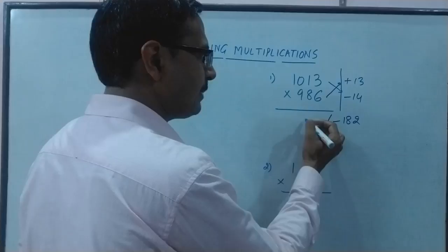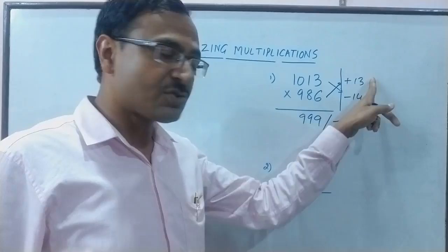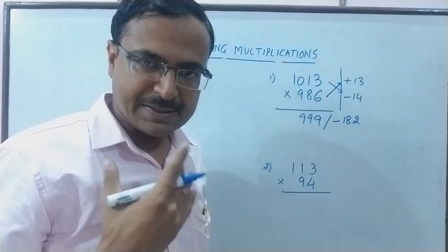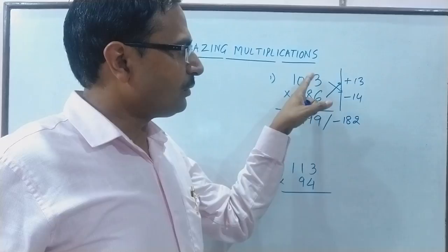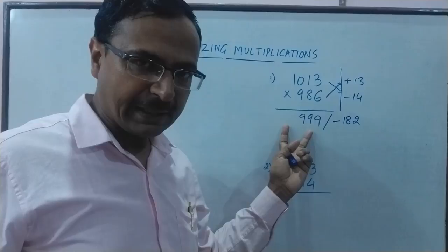On the left hand side I have to write the number which is the sum of either these two or these two. If you add 986 and 13 this will give you triple 9 and if you take the difference of 1013 and 14 this will also give you triple 9. From both sides the answer is going to be same.